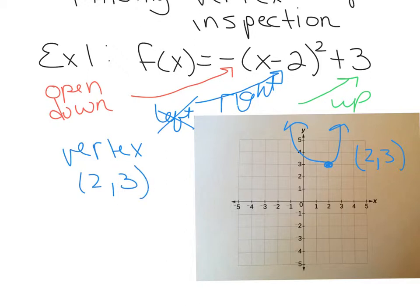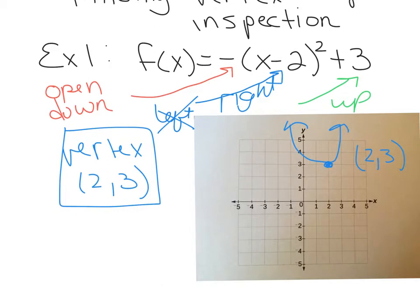The vertex for this function is going to be at the point (2, 3). We can do this without graphing, just by looking at the function when it's in vertex form. The coefficient out front does not affect the vertex — the only things that affect the vertex are the horizontal shift, which gives the x-coordinate with the opposite sign, and the constant term, which gives the y-coordinate.